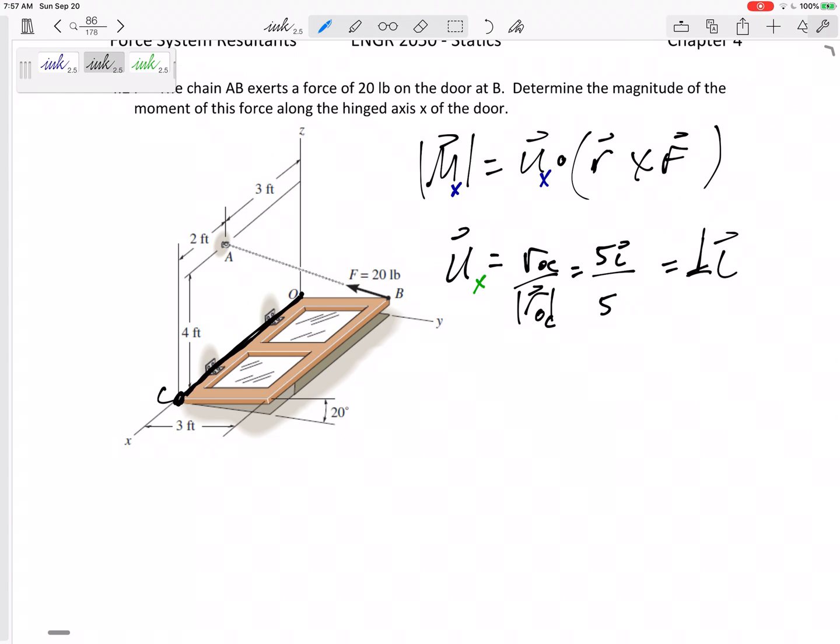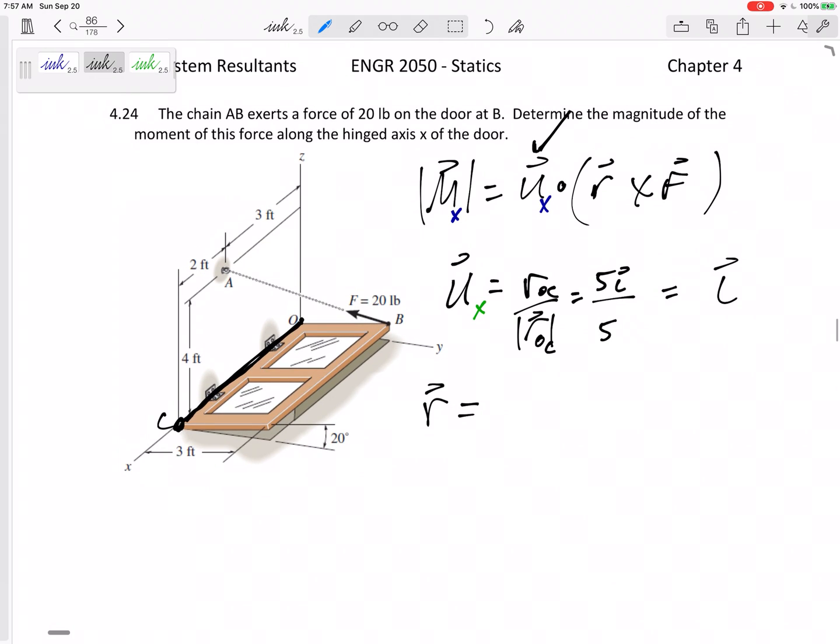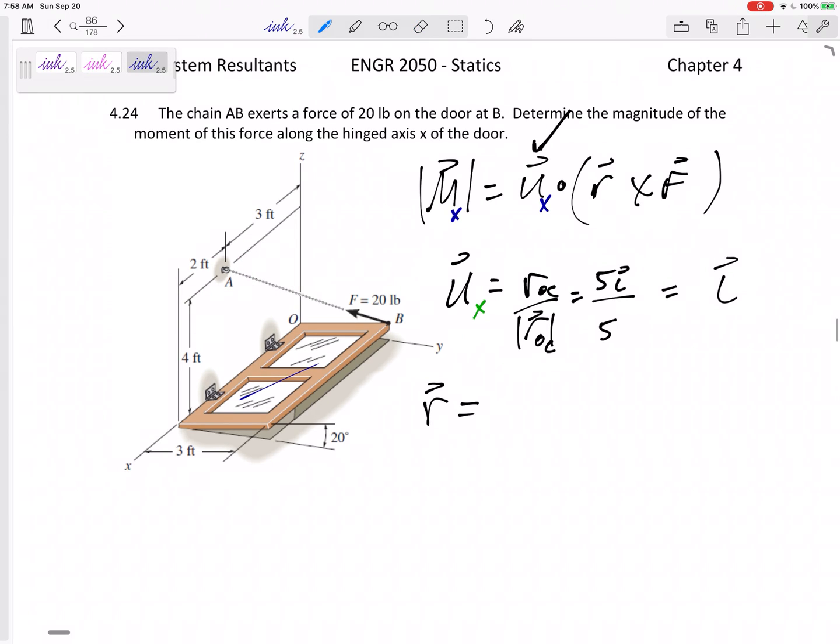One i. Let me kind of clarify, right? This is one i. All right, so there's my u. What is the r? I need an r that goes from the axis to the force. So I can go from O to B, O to A, C to A, C to B, or you know, I can go from anywhere on this axis to anywhere on the line of action of the force. I could go from about here straight up. Always choose the easiest r that you can, right? That makes the math easy enough.